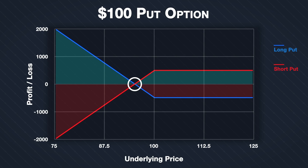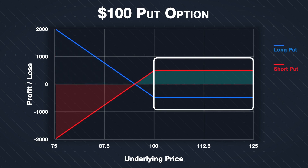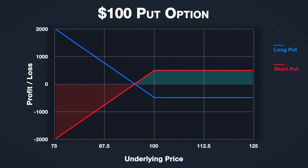The buyer and seller of the option share the same break-even point, ignoring any trading fees. When the underlying price is above the strike price at expiry, the put option buyer has a fixed risk. For the put option seller, this means they have a fixed profit potential. The seller has a cap on their profit, and that is the premium they collected for the option — in this case, $5 per share for a total of $500. No matter how high the price moves, the seller can make $500 at most.